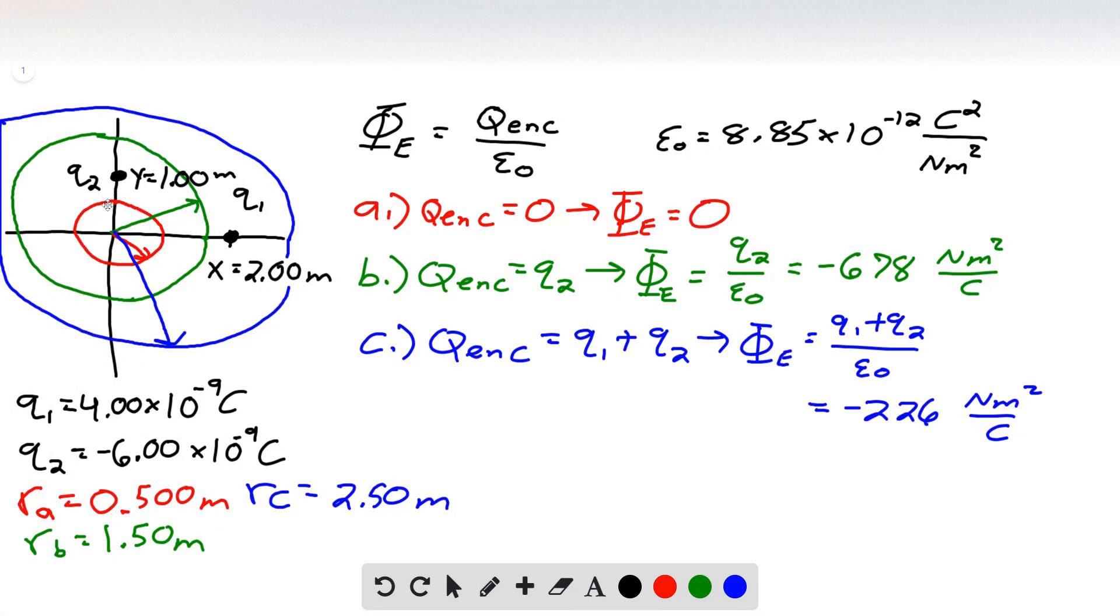In part B, we're looking at a radius of 1.50 meters. So I've drawn this one out a little bit further. And the radius for the sphere of 2.50 meters, I've drawn this one here. So I've color-coded each of these so it's easy to keep track of which one's which. Part A is in red, part B is in green, and part C is in blue.